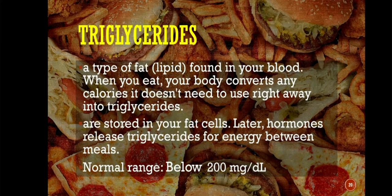Triglycerides are a type of fat found in your blood. When you eat, your body converts any calories it doesn't need to use right away into triglycerides, which are stored in your fat cells. Later, hormones release triglycerides for energy between meals. The normal range of triglycerides in our blood is below 200 mg per dL.